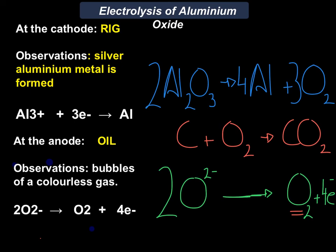On page 122, higher tier students have a little box: remind yourself that at the cathode we have reduction happening — OIL RIG — and at the anode we have oxidation happening.